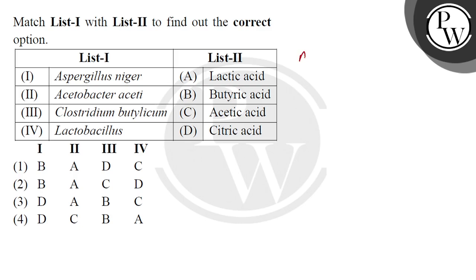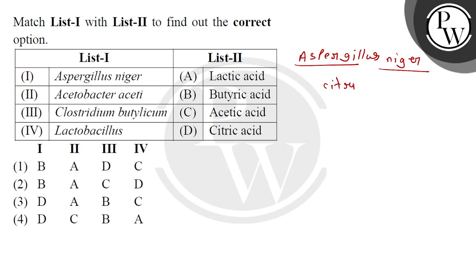First, let's talk about Aspergillus niger. If we talk about Aspergillus niger, then what is produced? It produces citric acid. So our answer for the first one is D.